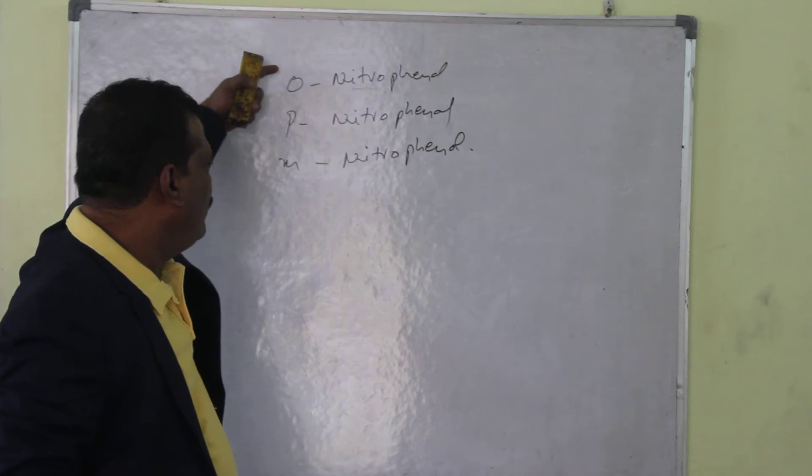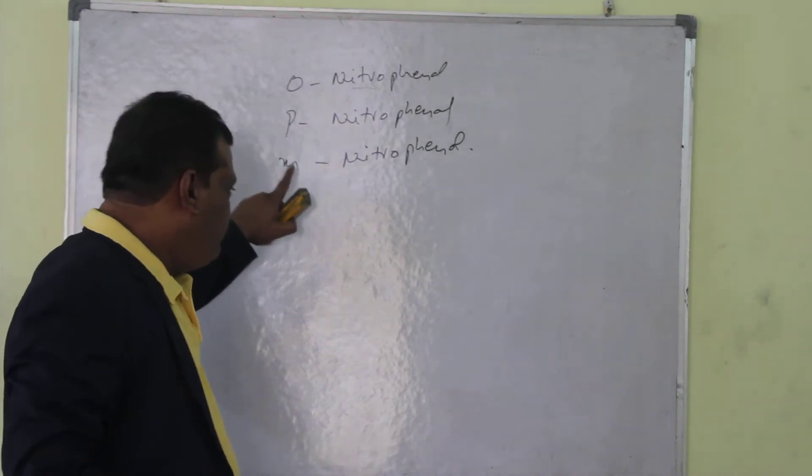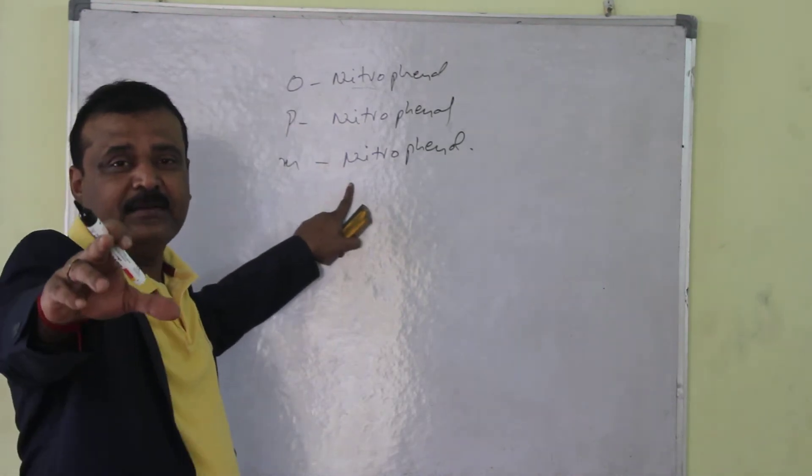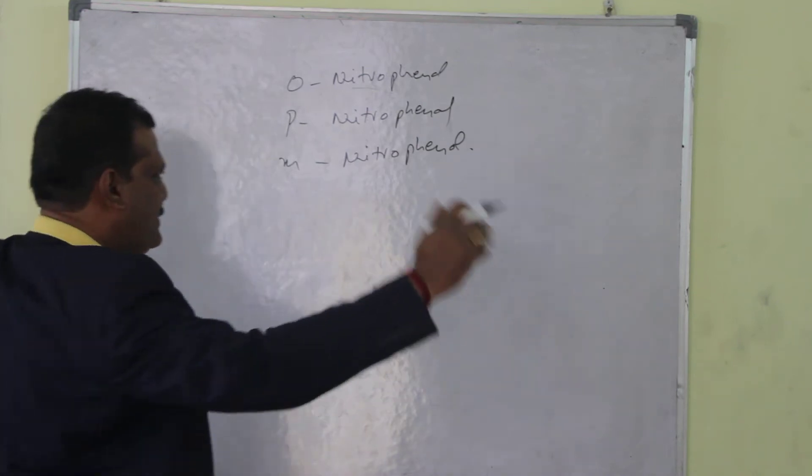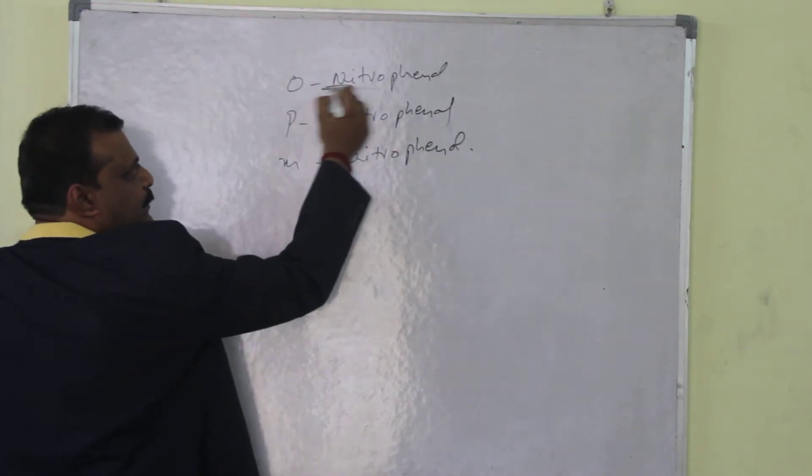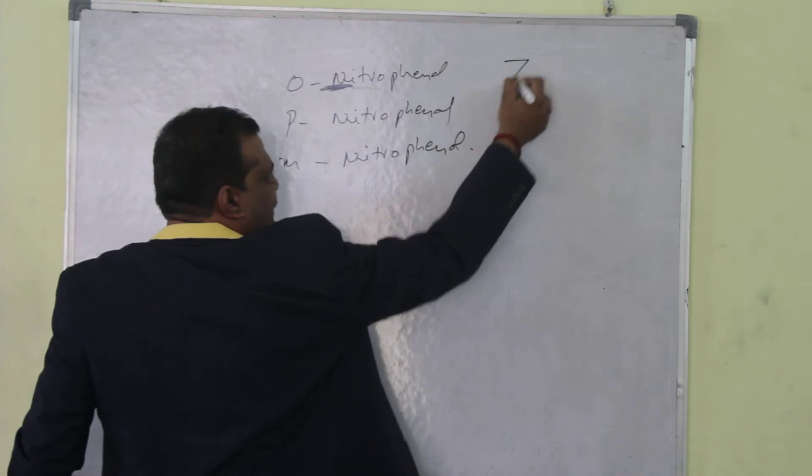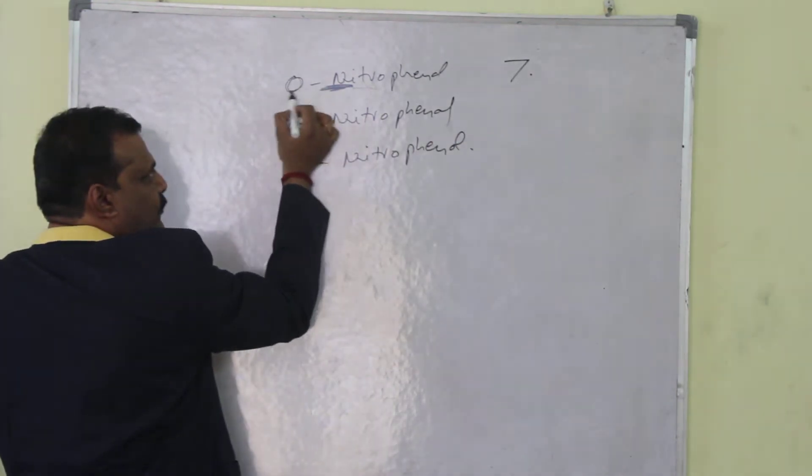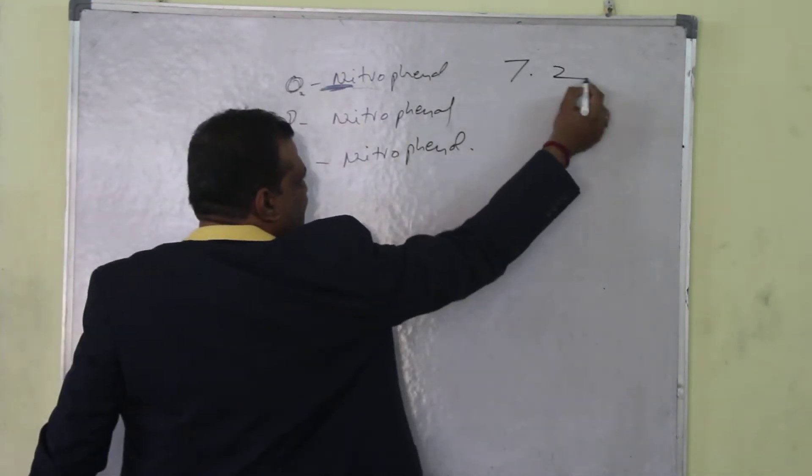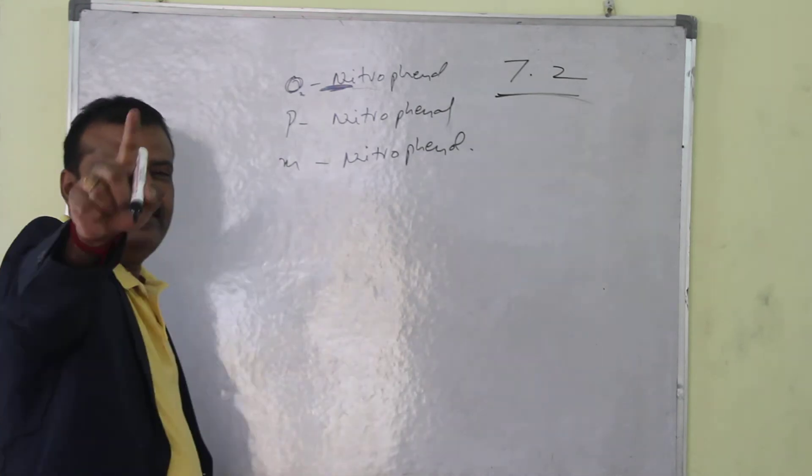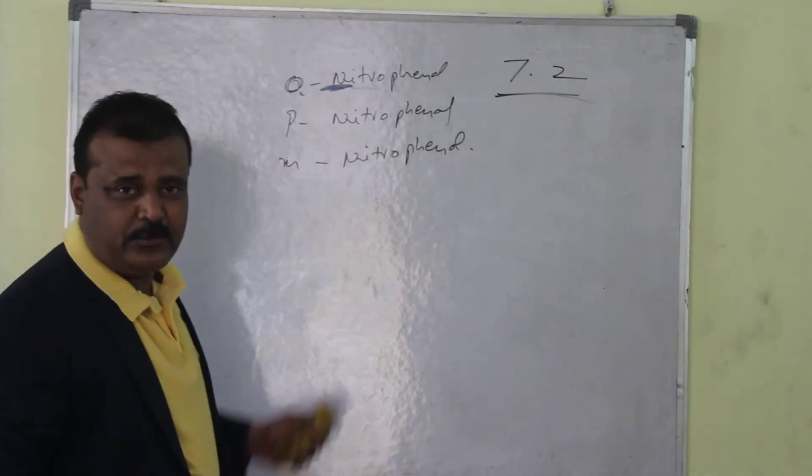In case of ortho nitrophenol, para nitrophenol, meta nitrophenol, the operation in the first part, look at this. Nitrogen atomic number 7, oxygen O2, so that's why this is 7.2. The pKa value of ortho nitrophenol is 7.2.